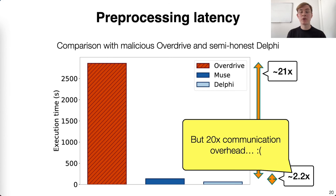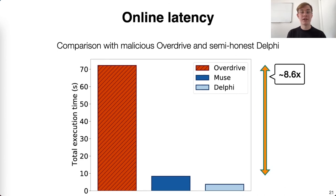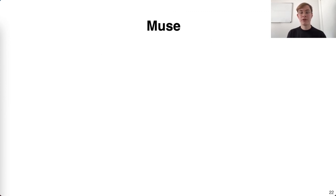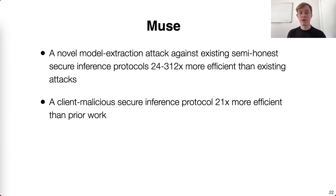However, we do note that Muse incurs a non-trivial communication cost compared to Delphi, which we hope future works can improve on. For the online phase, Muse is 8.6 times faster than OverDrive while being only 2.2 times slower than Delphi. In conclusion, in this work we first presented a novel model extraction attack against existing semi-honest secure inference protocols that is two orders of magnitude more efficient than existing attacks. Motivated by this, we designed a client malicious secure inference protocol 21 times more efficient than prior work. Thank you.